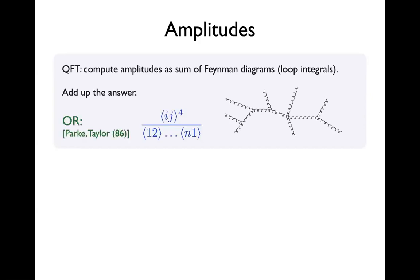On the other hand, for some quantities — the simplest quantities — you can just write down the answer. This is a famous formula due to Parke and Taylor, more than 30 years old now, for the maximally helicity-violating gluon amplitude. It's an all-multiplicity result. It's a remarkable thing that for certain quantities, all that massive complicated set of diagrams actually boils down to a single term.